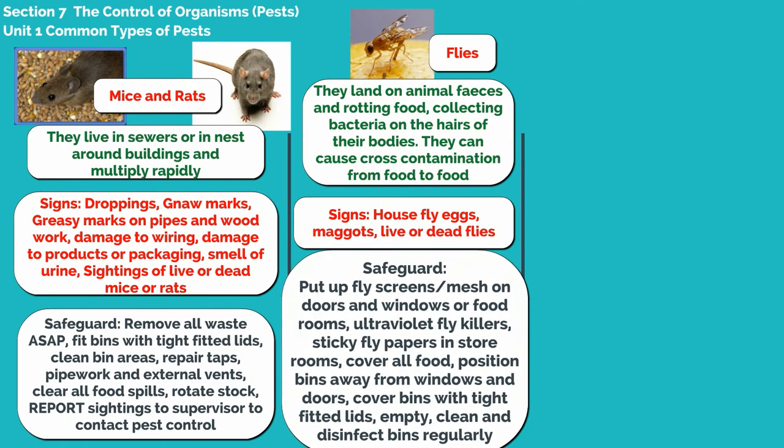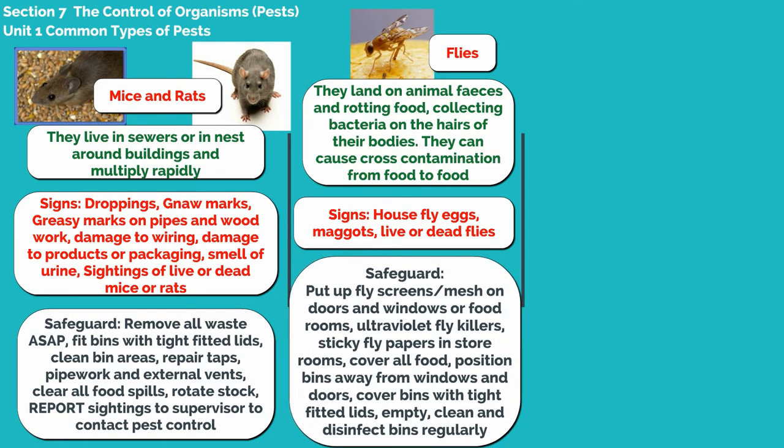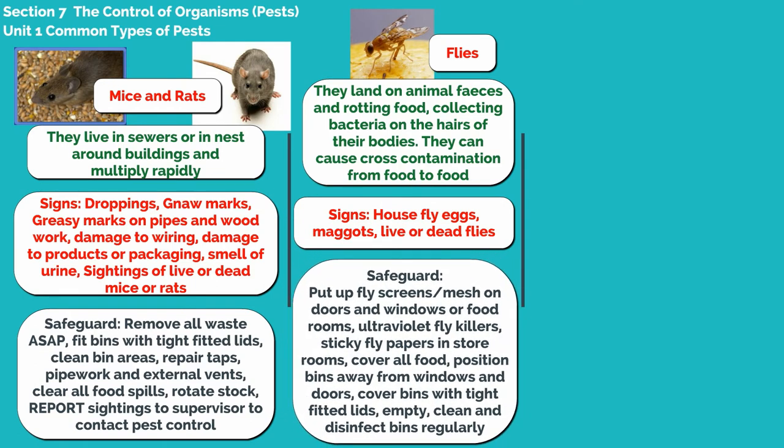In order to safeguard, you should put up fly screens, mesh on doors and windows of food rooms, ultraviolet fly killers, and sticky fly papers in storerooms. Cover all food, position bins away from windows and doors, cover bins with tight fitted lids, and empty, clean and disinfect bins regularly.